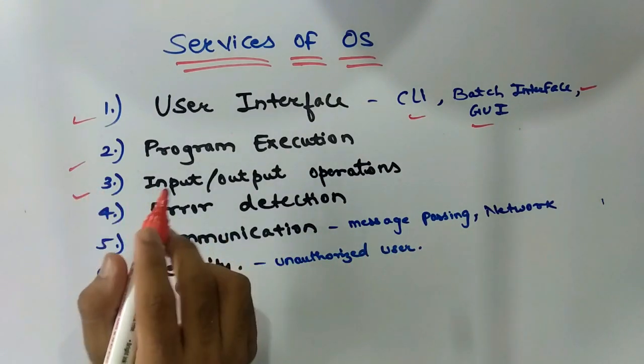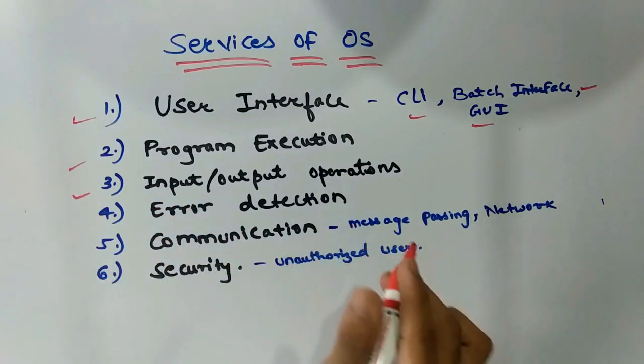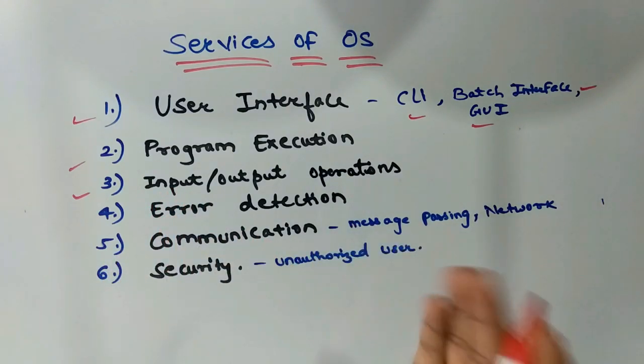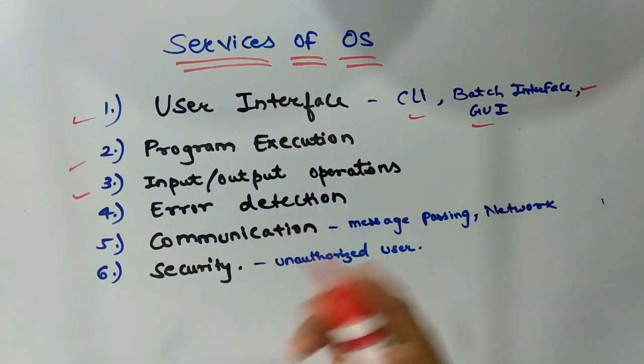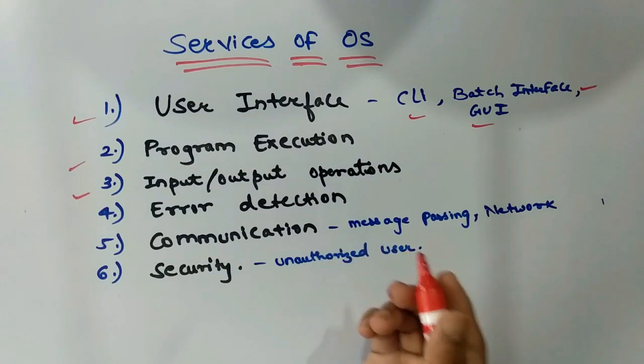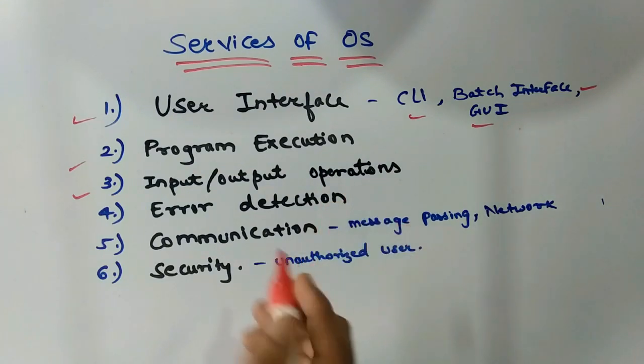The third is input output operation. Each program requires an input and produces an output. This involves the use of input output devices or files. The OS makes input output devices available to users in a user-friendly manner whenever required.